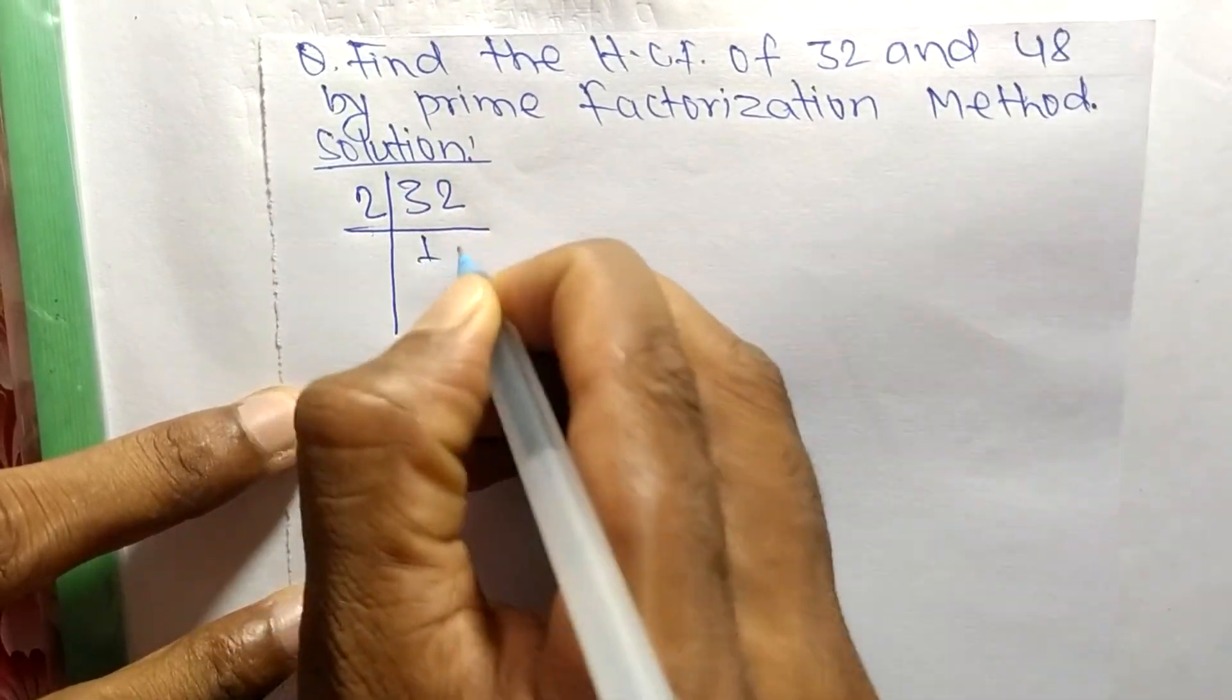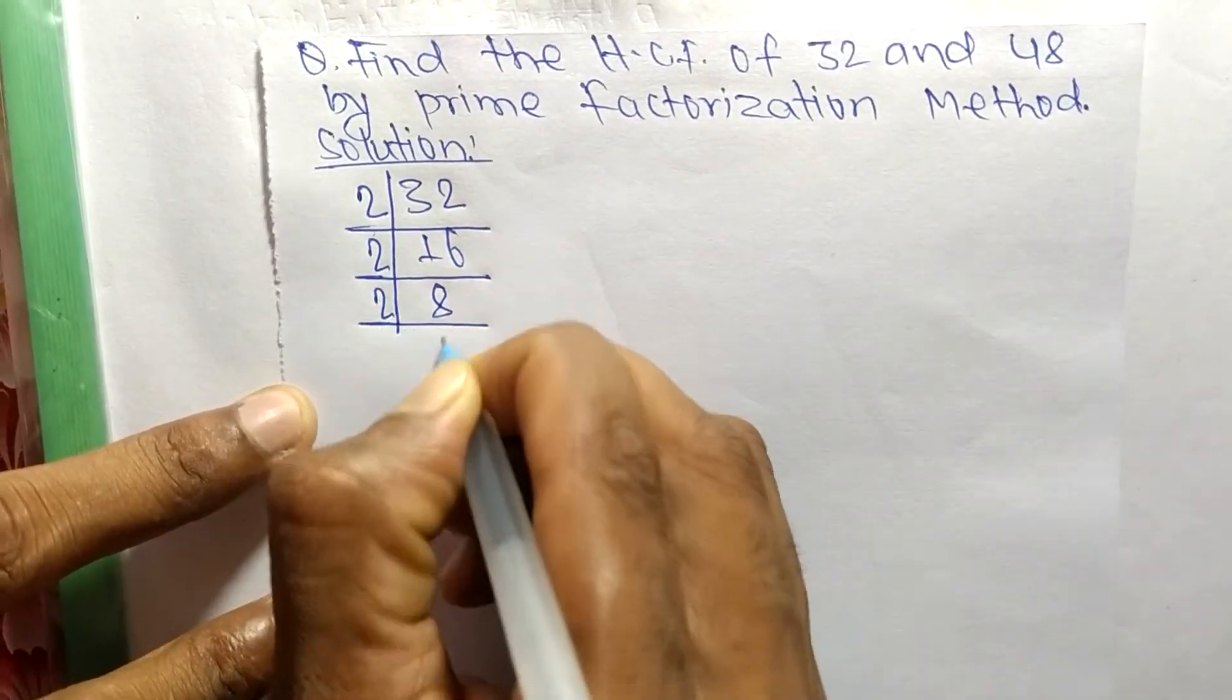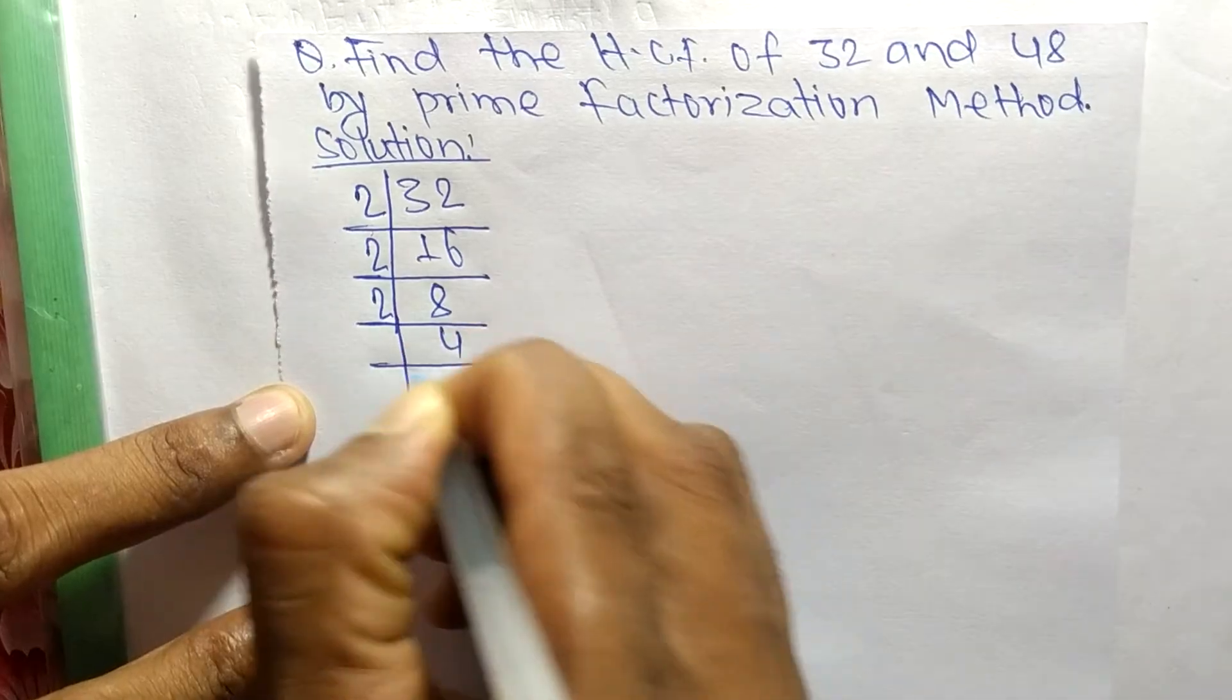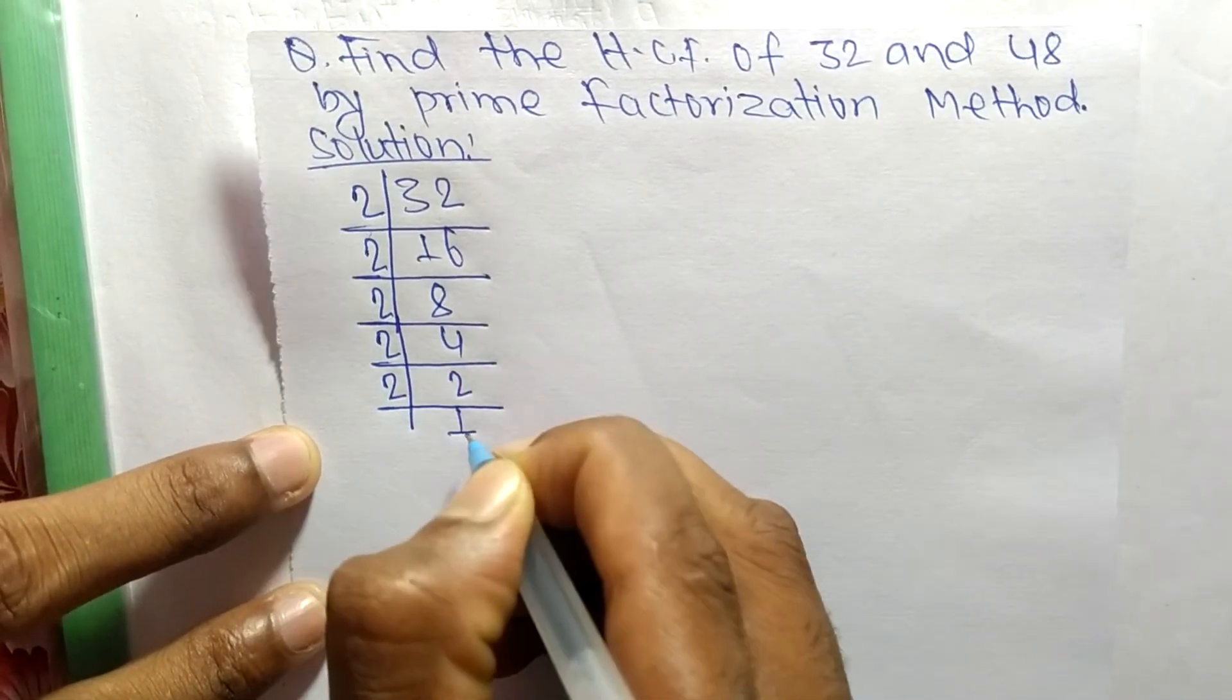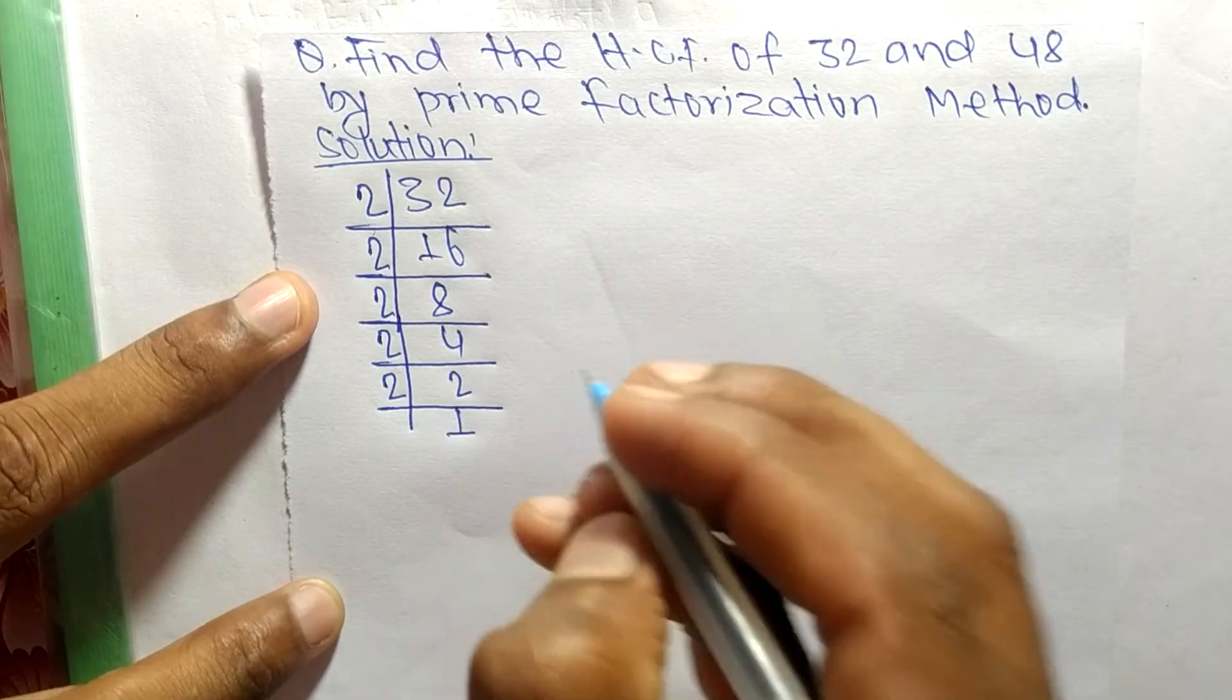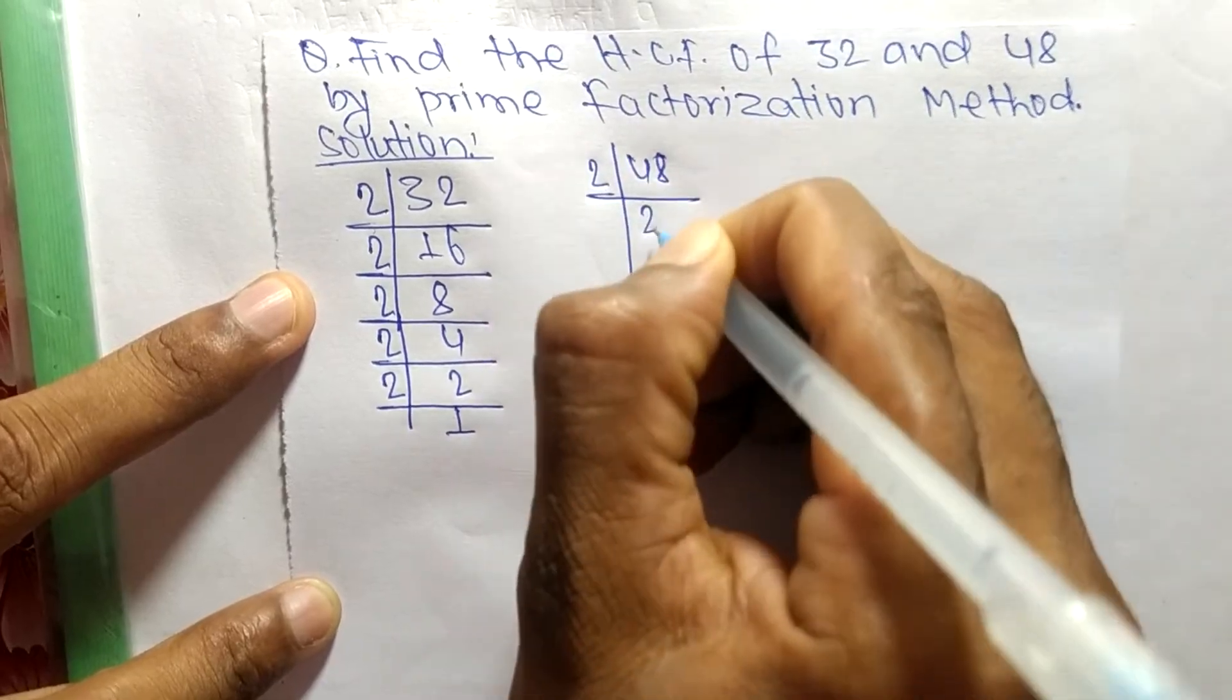The prime factors of 32 are: 2 times 16 means 32, 2 times 8 means 16, 2 times 4 means 8, 2 times 2 means 4, and 2 times 1 means 2.